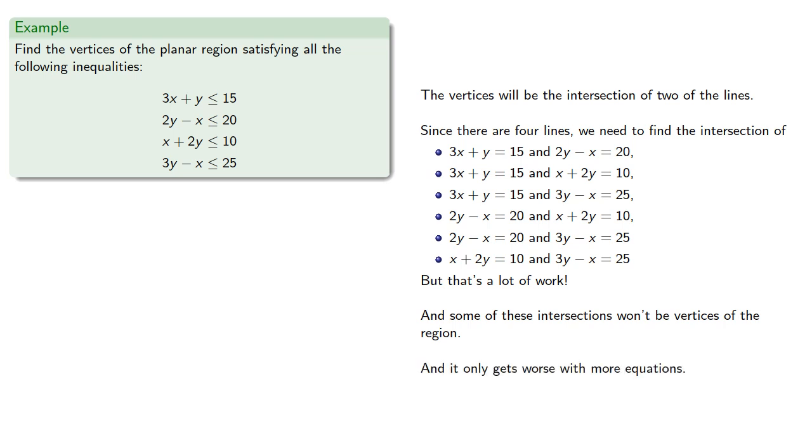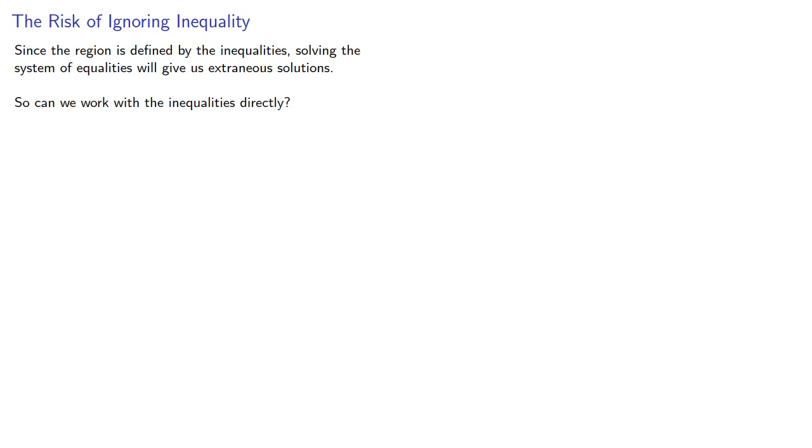And it only gets worse with more equations and more variables. The problem is this: since the region is defined by the inequalities, solving the system of inequalities will give us extraneous solutions. They'll be the places where two boundary curves intersect outside of the region. So how can we work with the inequalities directly?